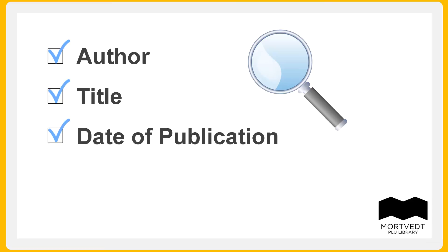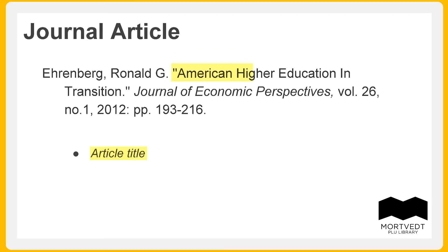For a journal article, these clues will include the presence of two titles: the title of the article and the title of the journal the article is published in. Journal citations may also include volume and issue numbers and page numbers.